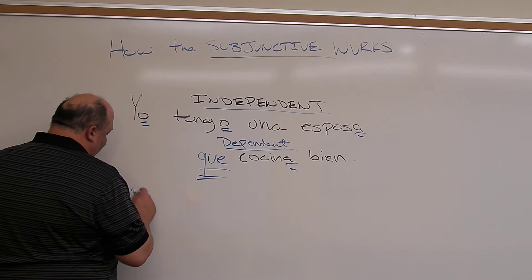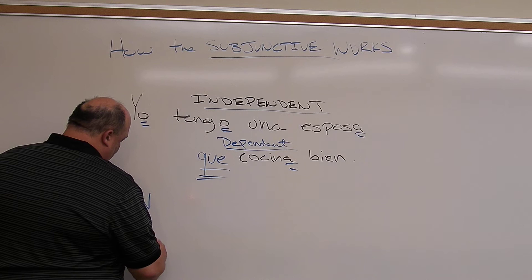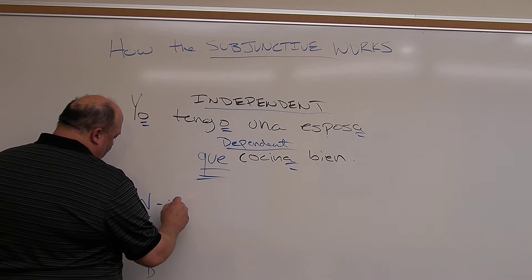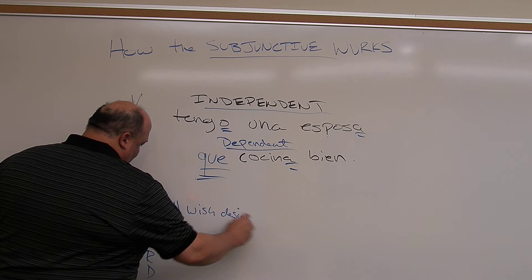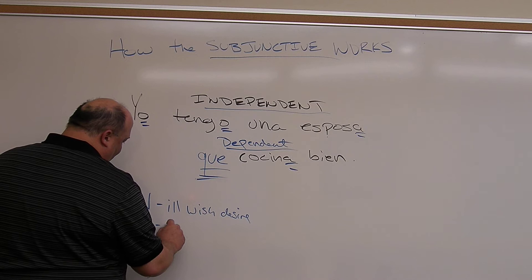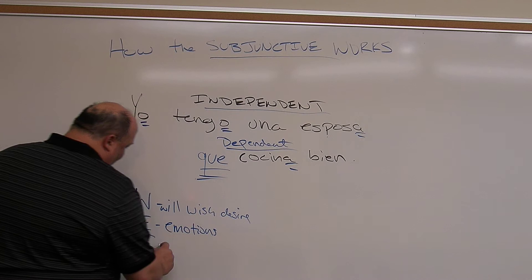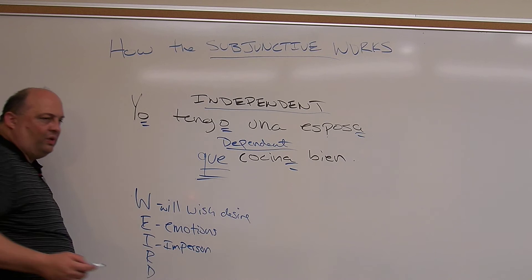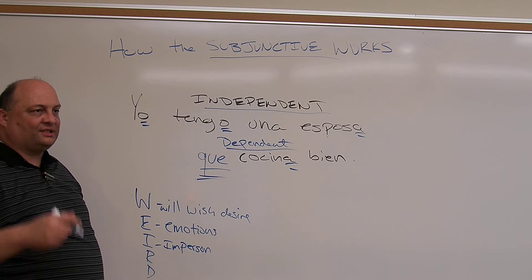There are several things that this dependent clause does not like, and it's pretty simple. The first thing it doesn't like is WEIRDO — that's an acronym. W — Will, W — Wish, D — Desire, E — Emotions, R — Recommendations, I — Impersonal expressions. Impersonal expressions are whenever we use the verb 'es' to begin the sentence. Es bueno, es verdad, es cierto — the subject is 'it,' and those are called impersonal expressions.